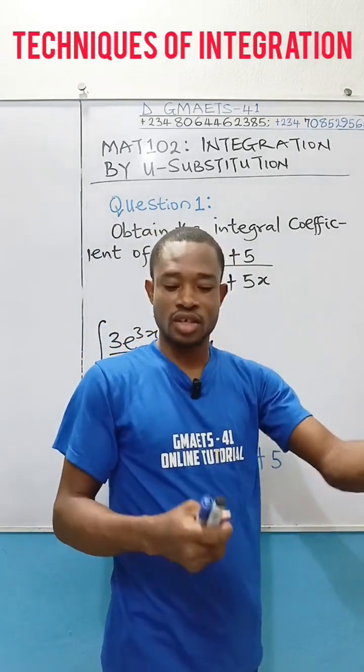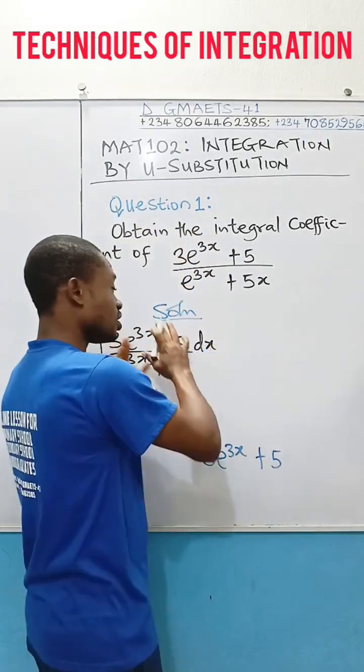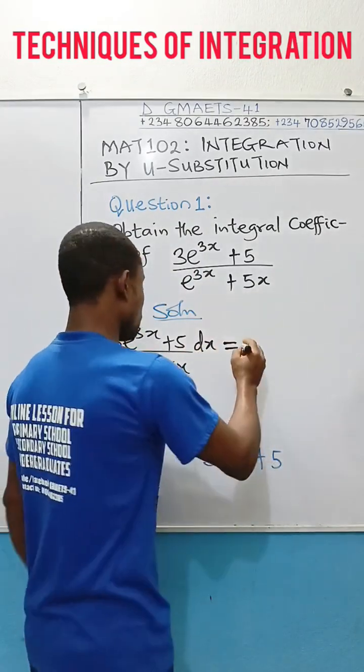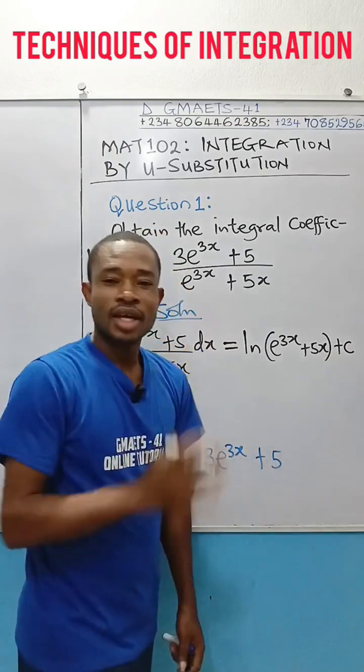So, whenever you differentiate the denominator and you get the numerator, simply, the integral or the integration of that term is ln of the denominator. And this is just the answer.